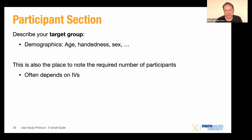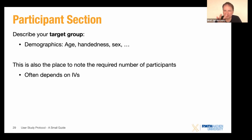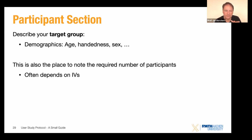This is also where you note the required number of participants, which often depends on your independent variables. For example, if you test an independent variable with three levels — a small, medium, and large device — and you're using a within-groups study where everybody does every condition, you would use a Latin square so each ordering of conditions occurs at some point, balancing out learning effects. But that means you need three times the number of participants you would need if you didn't have these three levels.